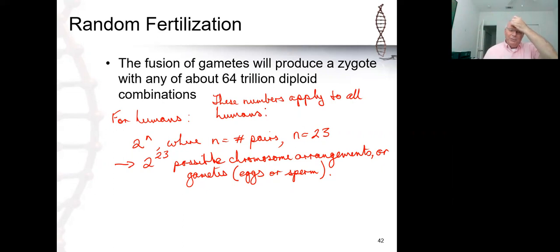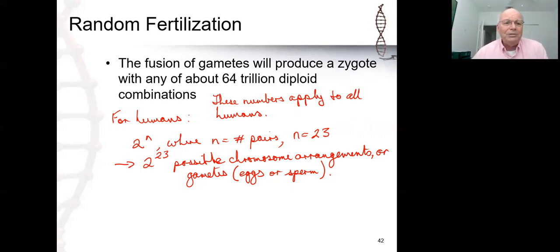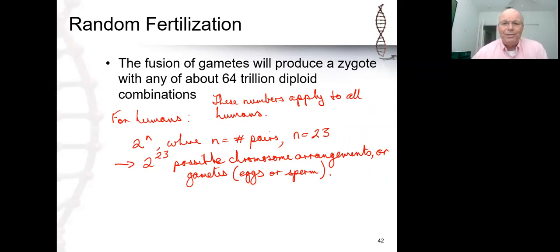These numbers apply to all humans. We all have the possibility of producing 2 to the power 23 different types of eggs or sperm. The eggs or sperm that you make are unique to you — no one else can make them, because no one else has the same combination of chromosomes that you have. Even your brothers and sisters do not have exactly the same chromosomes, because their genes may be in different possible combinations.